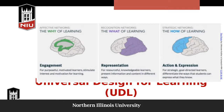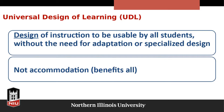Universal design for learning has a few different components: engagement, representation, and action and expression. Universal design principles can be applied to the overall design of instruction, as well as to specific instructional materials, facilities, and strategies such as lectures, classroom discussions, group work, web-based instruction, labs, field work, demonstrations, and of course the syllabus as well.